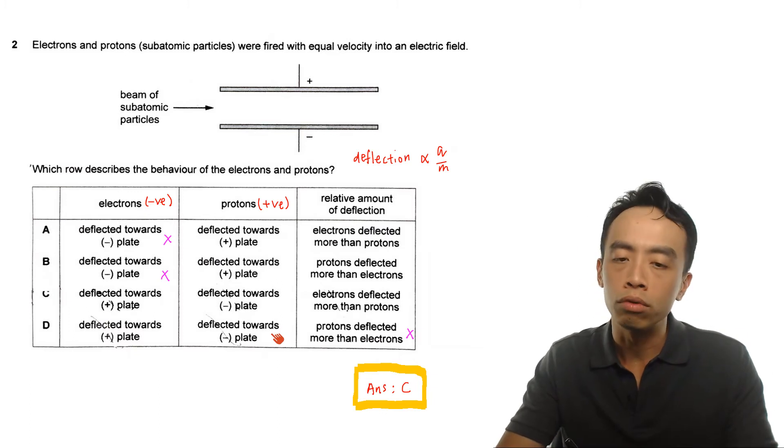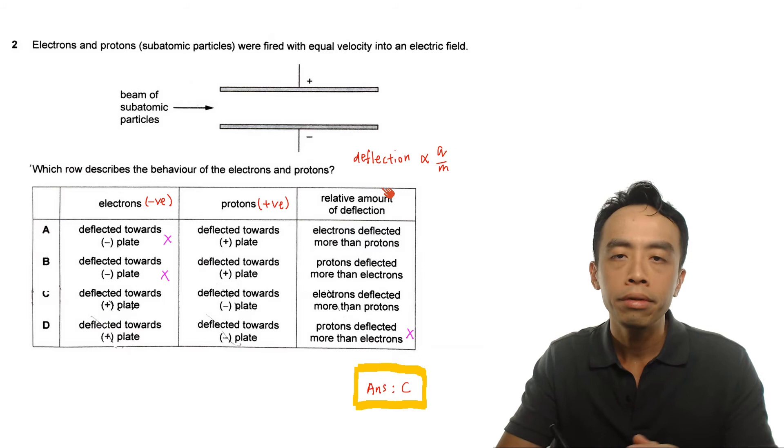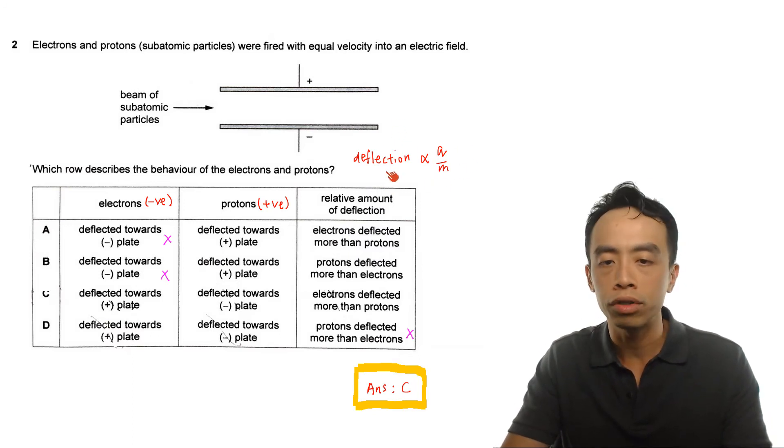Now the next thing that we have to look at is the extent of deflection or the angle of deflection. In this case the question phrased this as relative amount of deflection. Then what we need to make use of is this very simple expression, the angle of deflection or the extent of deflection. It is related to charge to mass ratio.